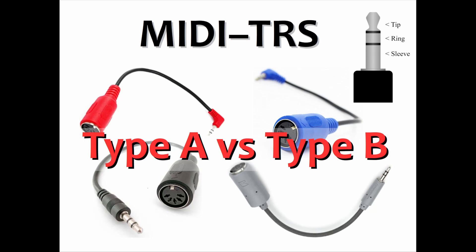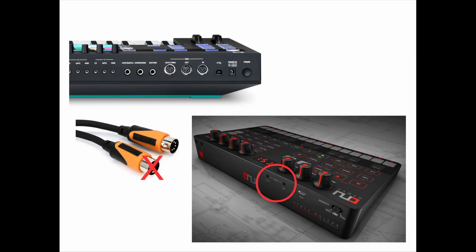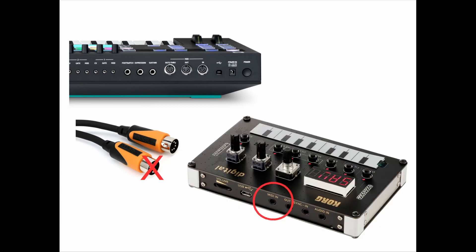Today we're going to talk about MIDI TRS Type A and Type B adapters. If your MIDI device has the small TRS headphone-style jacks on it, like this IK Multimedia Synth or this Korg NTS1 Synth, then you'll need an adapter to convert from the small TRS connector to the 5-pin DIN connectors.